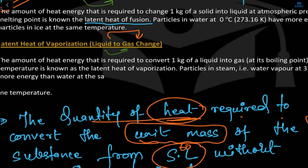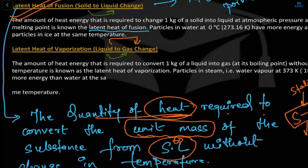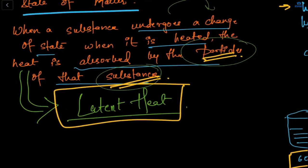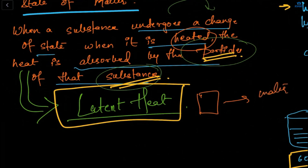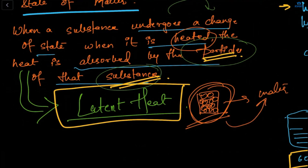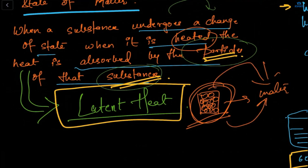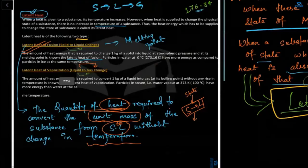How does this process work? When I heat a solid — for example, ice converting into water — the heat is absorbed by the particles of the ice. That absorbed heat is known as latent heat, which helps the solid convert into a liquid without changing its temperature.